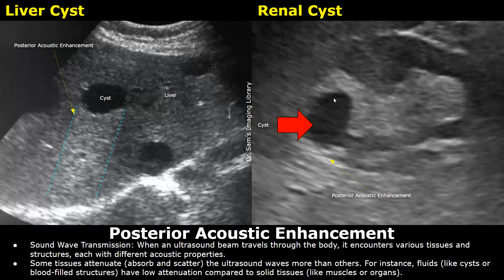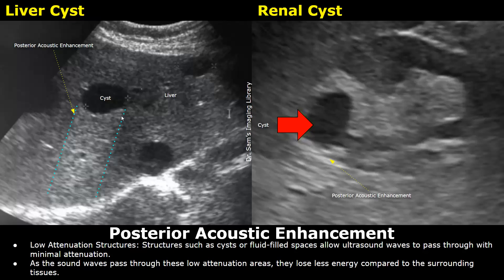As compared to the surrounding tissues, an ultrasound beam encounters various tissues of different densities as it passes through the body. Some tissues attenuate — that is, absorb and scatter — the ultrasound waves more than others. Attenuation refers to the weakening or decrease in intensity of the ultrasound wave as it passes through the body's tissues.